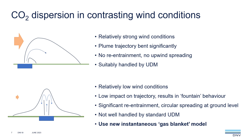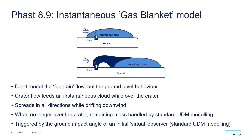The gas blanket model in FAST 8.9 is specifically targeted to model these fountain-type cases in low wind conditions. We don't explicitly model the fountain effect itself. Instead, we try to predict when we might see this type of behaviour, and when we do, we represent the ground level behaviour using an instantaneous cloud, as shown in the top diagram. Mass is fed into the instantaneous cloud from the crater below while the cloud remains over the crater. The cloud will then spread in all directions while at the same time drifting downwind due to the background wind. When no longer over the crater, the remaining mass is handled by standard UDM modelling, as shown in the bottom diagram.